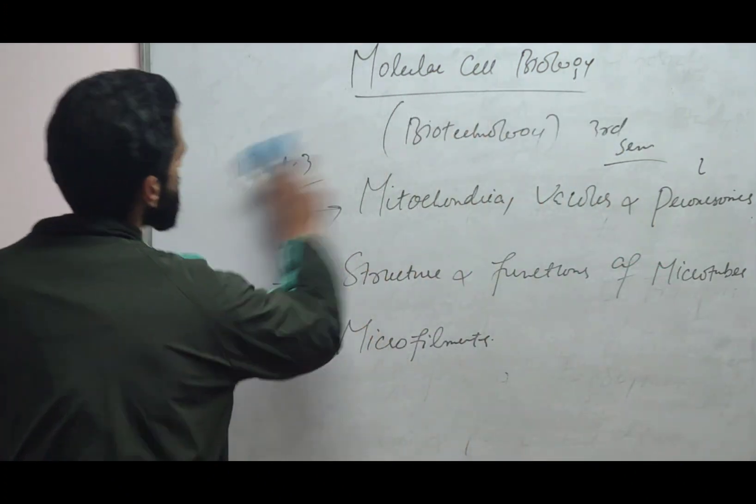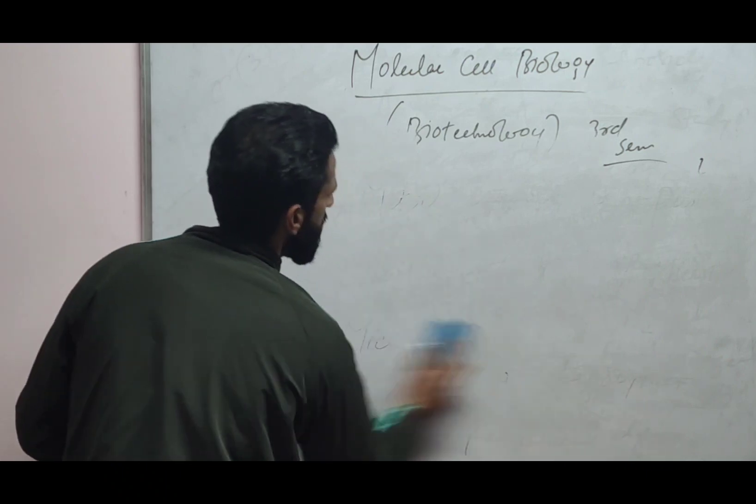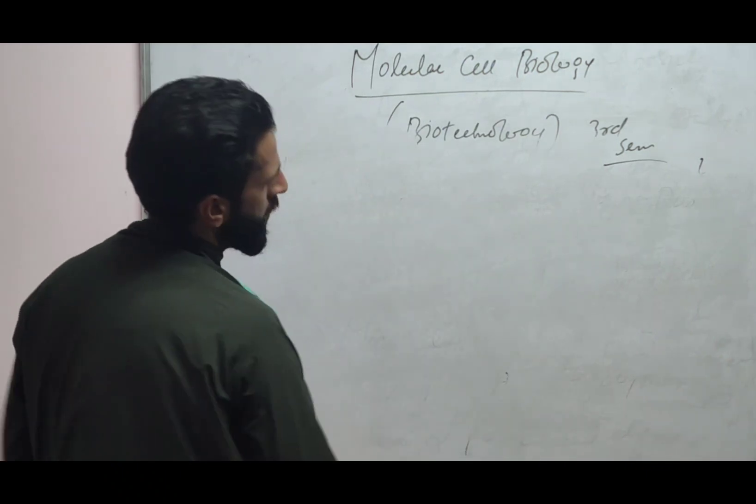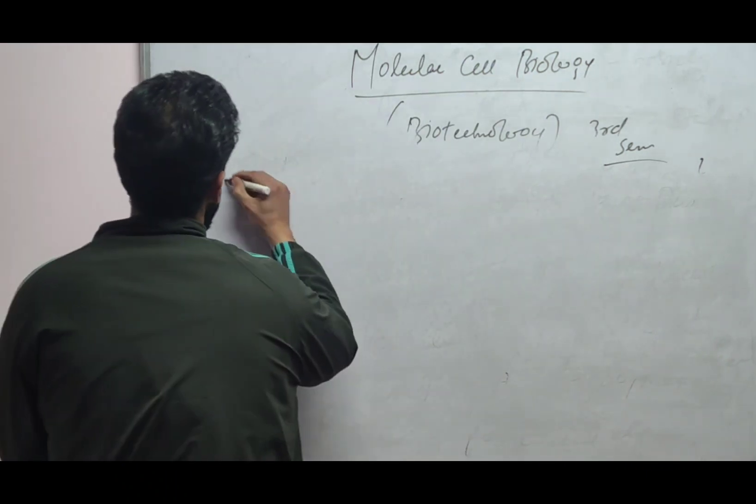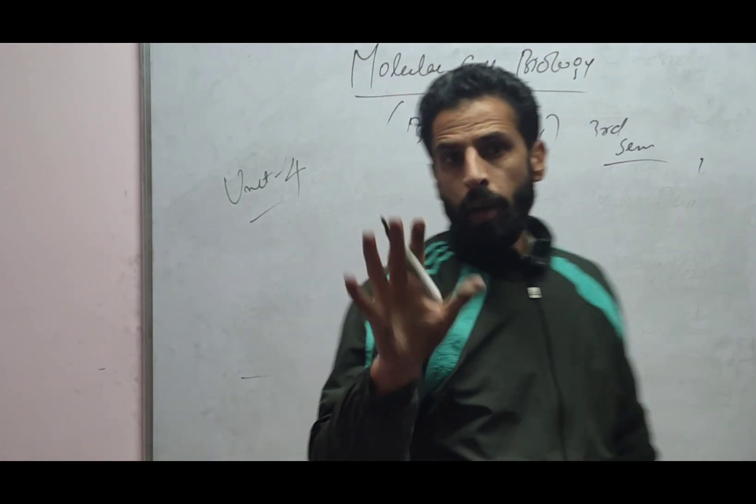Coming to last unit. In last unit we have unit four. Direct will come tight and gap junction. What is tight and gap junction.